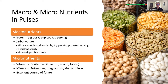For pulses in terms of macronutrients, pulses are an excellent source of plant-based protein — about nine grams per half cup cooked serving — and a great source of complex carbohydrates. Pulses have quite a large amount of fiber: about eight grams per half cup serving, including both soluble and insoluble fiber. They are also a source of resistant starch and slowly digestible starch. In terms of micronutrients, pulses are an excellent source of B vitamins — specifically thiamine, niacin and folate — as well as the minerals potassium, magnesium, zinc and iron, and are a really excellent source of folate.